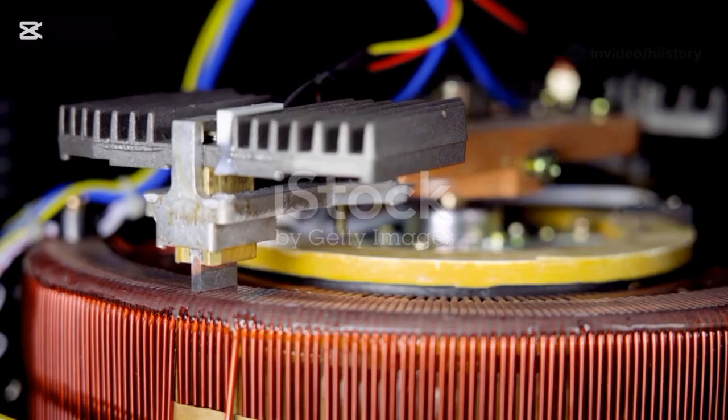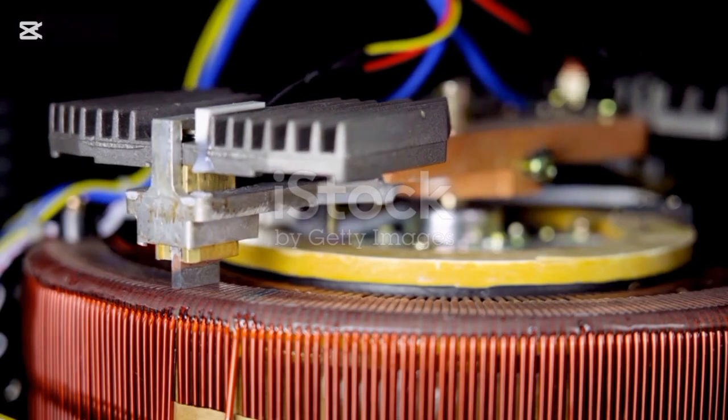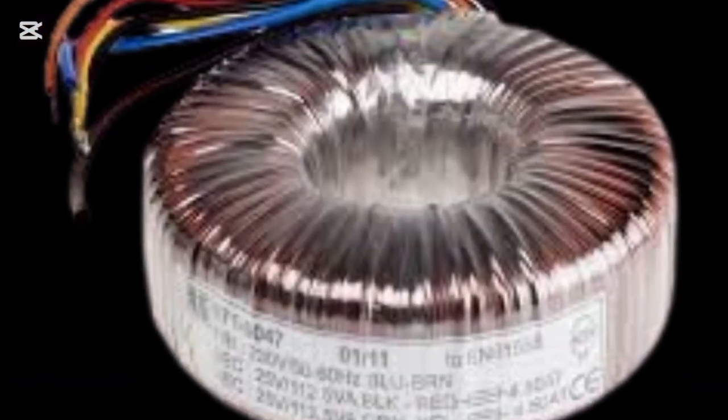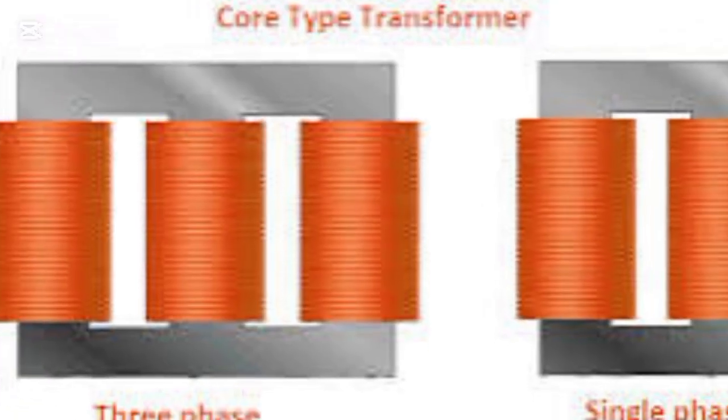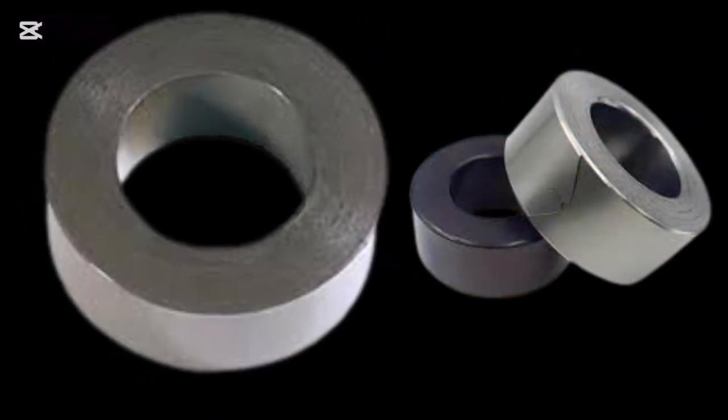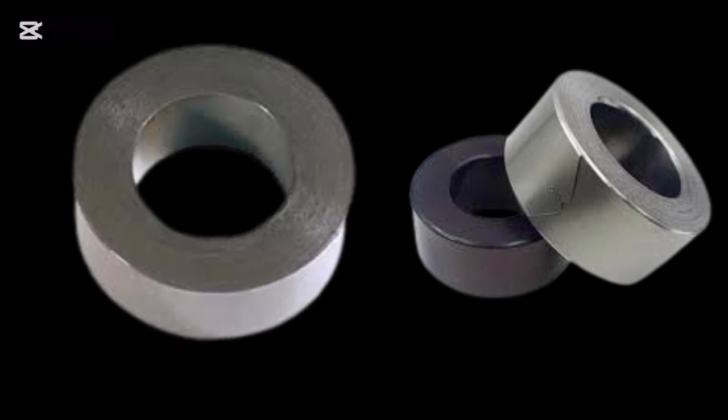Some transformers, especially those used in sound systems and sensitive electronics, use a different design called the toroidal transformer. Instead of the traditional square or rectangular core, a toroidal transformer uses a donut-shaped metal core, often made from silicon steel or ferrite.